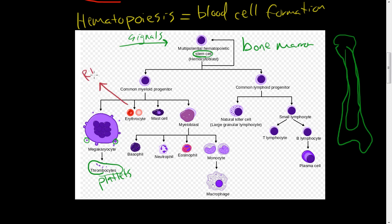Red blood cells carry oxygen to and from our tissues — we all have an intuition of what an erythrocyte or red blood cell is. Mast cells, which we talked about in previous videos, release histamine. Histamine is a vasoactive substance that causes vascular permeability and vasodilation, so more blood flow can get to an area where the mast cell has been triggered.